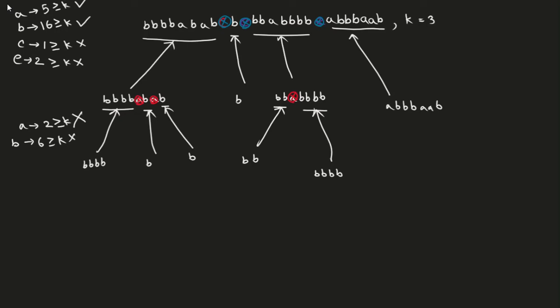Now for the fourth part, we see that A occurs three times, which is greater than or equal to k, and B occurs four times, which is also greater than or equal to k. So the length of this substring is seven, and this returns seven.